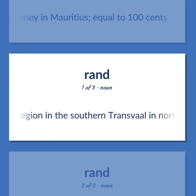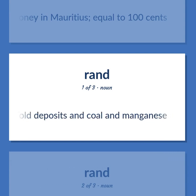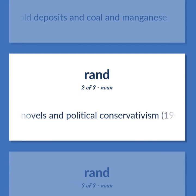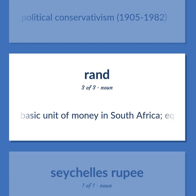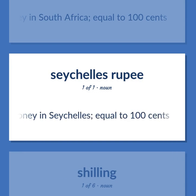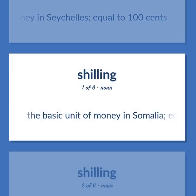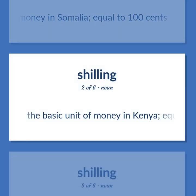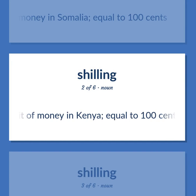Iraqi region in the southern Transvaal in northeastern South Africa — contains rich gold deposits, coal, and manganese. United States writer born in Russia, noted for her polemical novels and political conservatism, 1905–1982. The basic unit of money in South Africa, equal to 100 cents. The basic unit of money in Seychelles, equal to 100 cents. The basic unit of money in Somalia, equal to 100 cents. The basic unit of money in Kenya, equal to 100 cents.